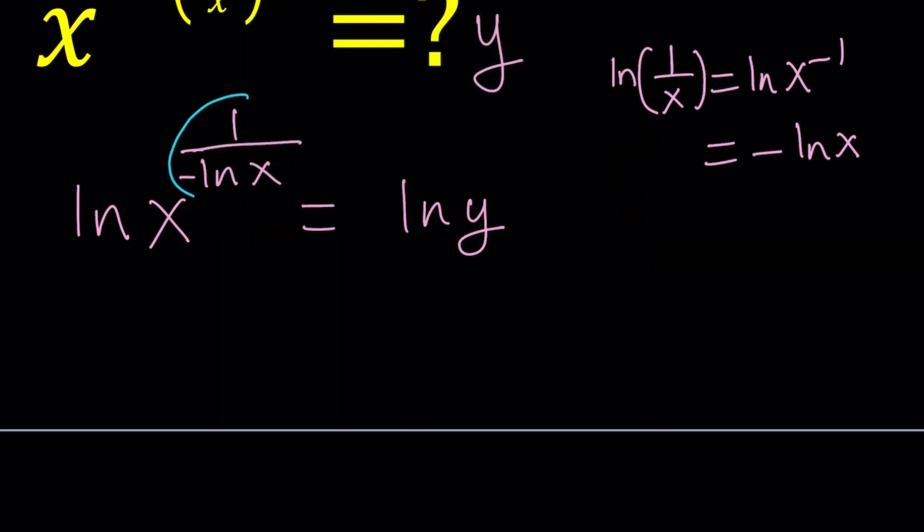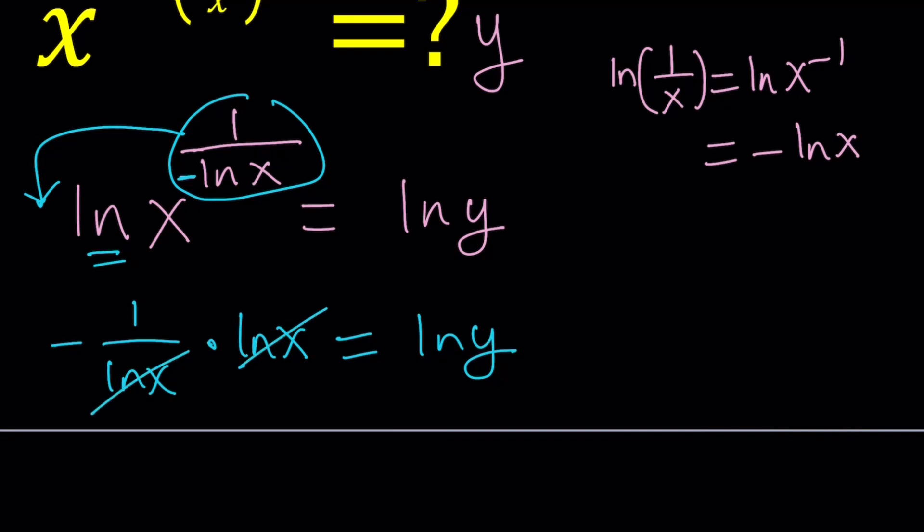But you'll get the wrong answer for sure. And then this is an exponent, and the log property says you can move this to the front and multiply. ln x is just ln x. So we're going to have, and I don't like this, what is 1 over negative something? Let's just write it as negative 1 over ln x. Negative 1 over ln x times ln x. Do you see what I see? Equals ln y. Uh-oh, ln x cancels out. We end up with something super duper simple. Numerical value. Awesome. ln y equals negative 1.